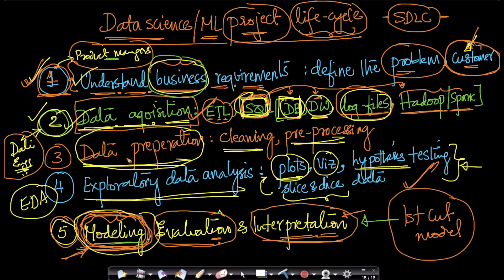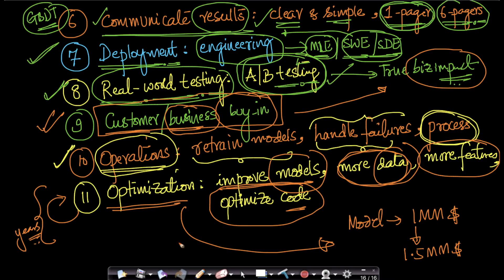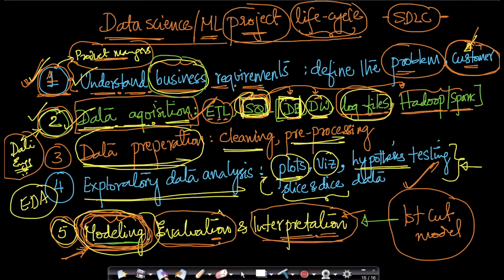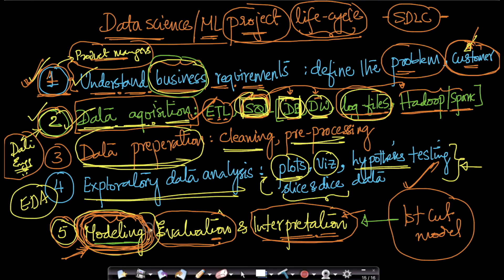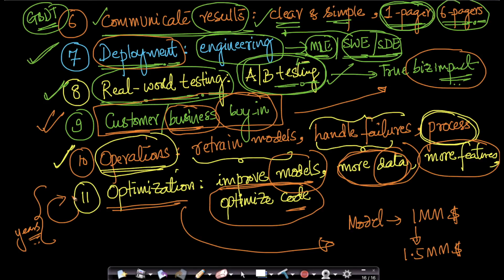This is the typical life cycle of a machine learning project. In some companies certain steps are handled by data engineers, product managers, or software engineers. But a good machine learning engineer needs to be comfortable with all 11 stages to be a true ML engineer. A lot of people just focus on modeling, but you need to be a well-rounded data scientist or ML engineer who can participate in all stages, which is what our course covers through case studies.